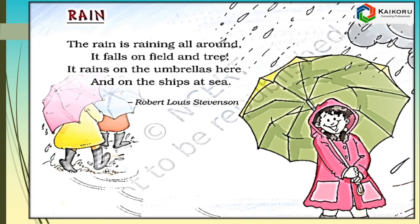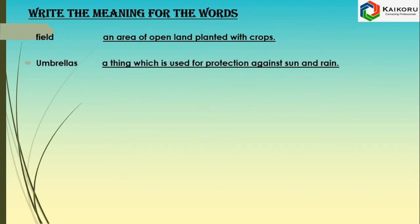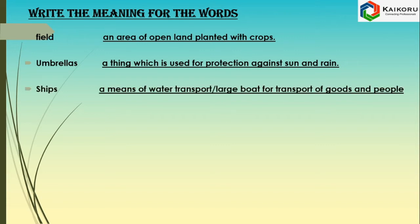The poem is by Robert Louis Stevenson. Write the meaning for the words. Field: an area of open land planted with crops. Umbrella: a thing which is used for protection against sun and rain. Ships: a means of water transport or a large boat for transport of goods and people.